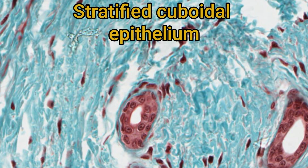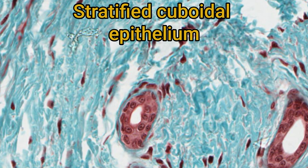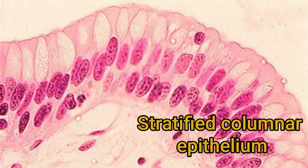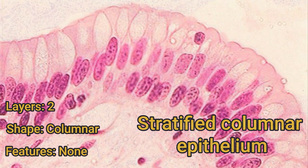Next up is stratified cuboidal epithelium. This is quite rare and you'll only find it in larger ducts in the skin glands. Compared to stratified squamous epithelium, it's kind of thin and usually only two cells thick, thereby barely classifying as stratified — it exists, but it's rather uninteresting. It's also worth briefly mentioning stratified columnar epithelium, which is also very rare, but does exist. Mostly it's found in the conjunctiva, specifically the exposed sclera and inner surface of the eyelids.